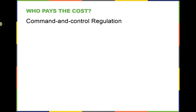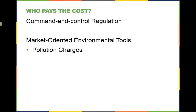Is this an effective way to limit negative externalities? Yes, they can be. But they may also have a negative impact on the operations of the free market. Here are some other more market-oriented tools to address negative externalities like pollution. The first is a pollution charge, or a tax on the quantity of pollution that a firm emits. This works in terms of the cost-benefit analysis of reducing pollution versus paying the tax for polluting. Firms will invest in reducing pollution if the alternative tax is more expensive.